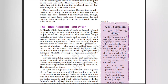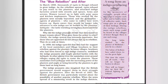The Blue Rebellion and after: In March 1859, thousands of ryots in Bengal refused to grow indigo. As the rebellion spread, ryots refused to pay rent to the planters, attacked indigo factories armed with swords and spears, bows and arrows. Women turned up to fight with pots, pans, and kitchen implements. Those who worked for the planters were socially boycotted, and the gomastas — agents of planters who came to collect rent — were beaten up. Ryots declared they could no longer be forced to take advances to sow indigo or be bullied by the planters.